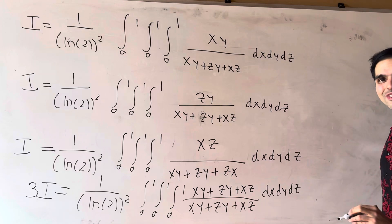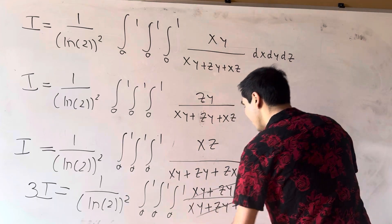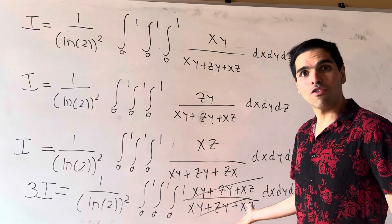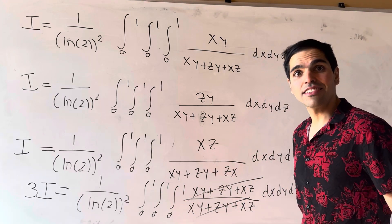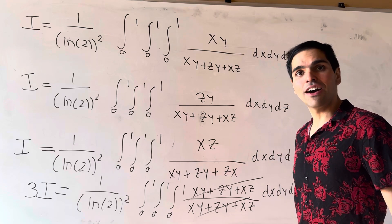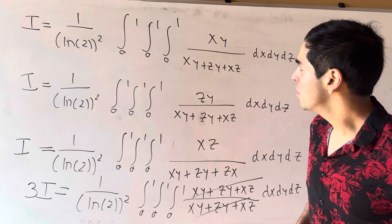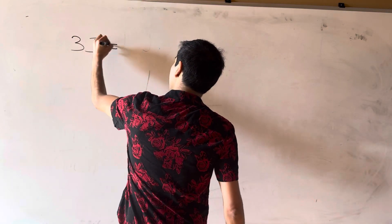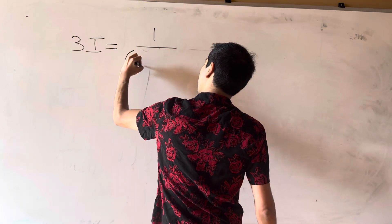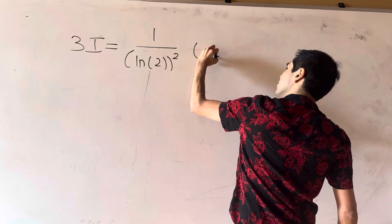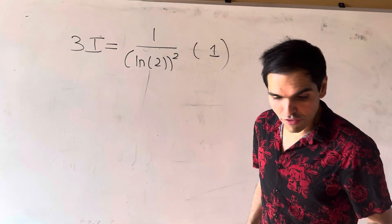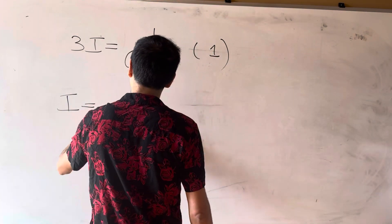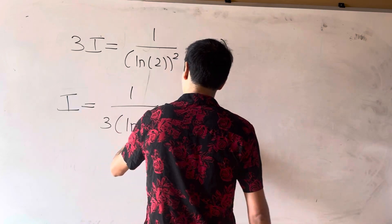Now all of that cancels out and you get the triple integral of 1, which equals 1. So 3I = (1/ln(2)²) × 1, and solving for I, the original integral is I = 1 / (3 ln(2)²).